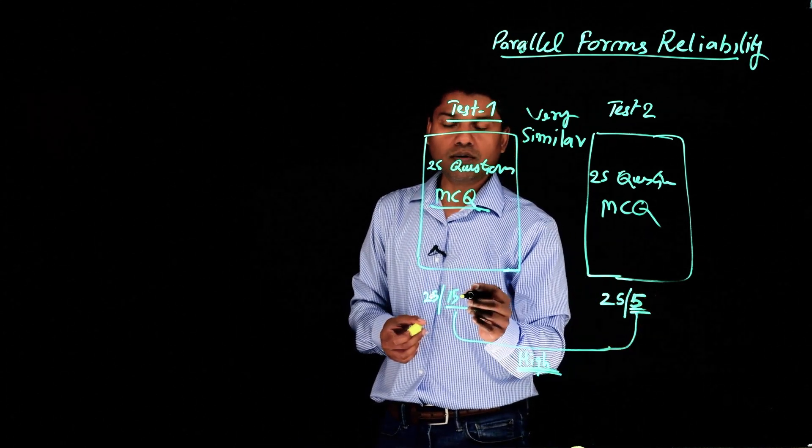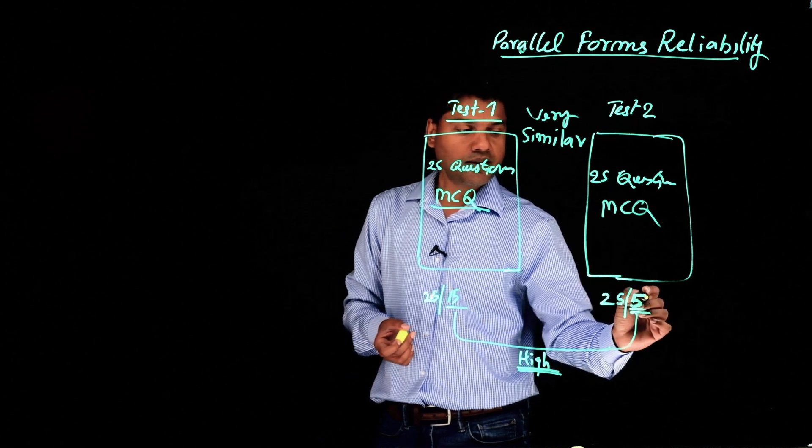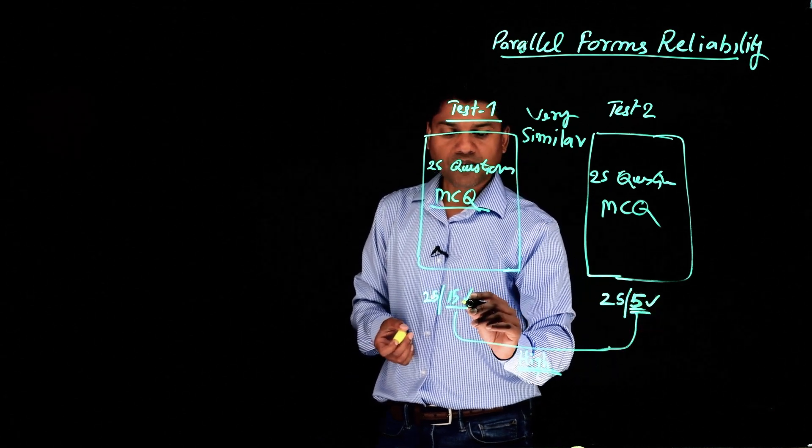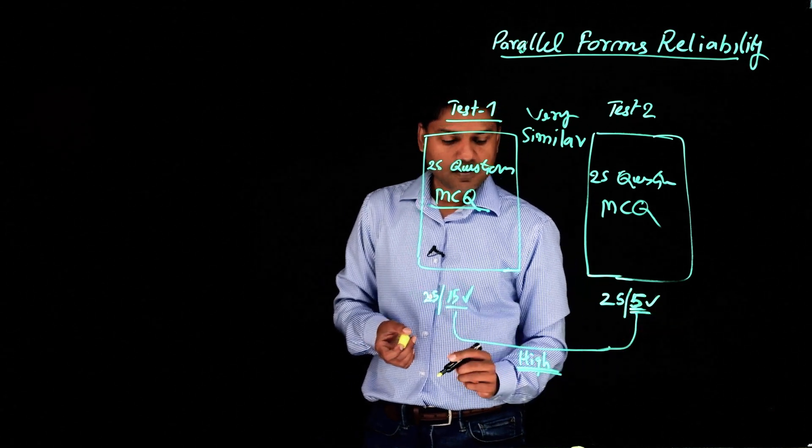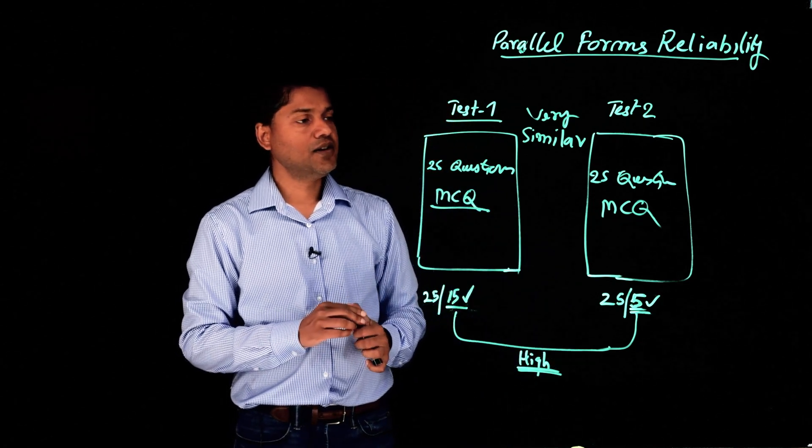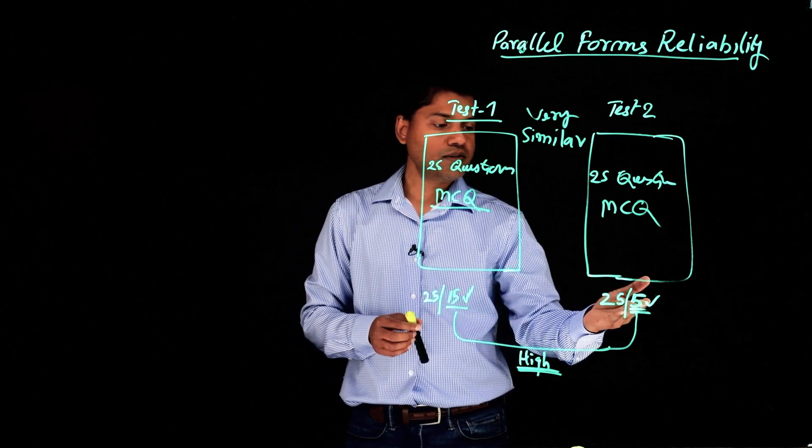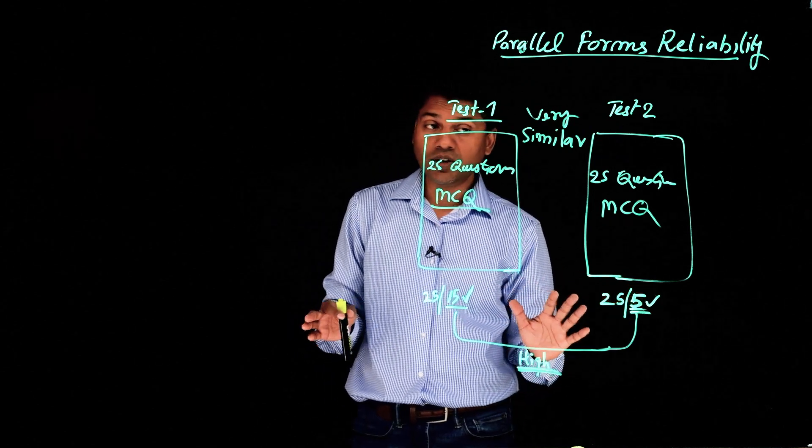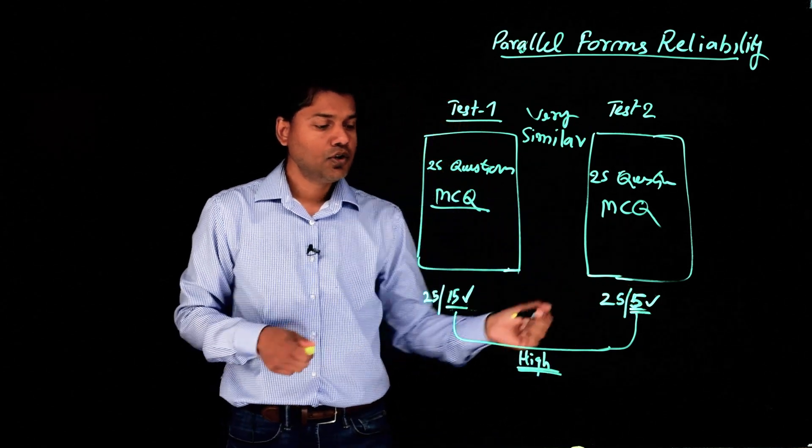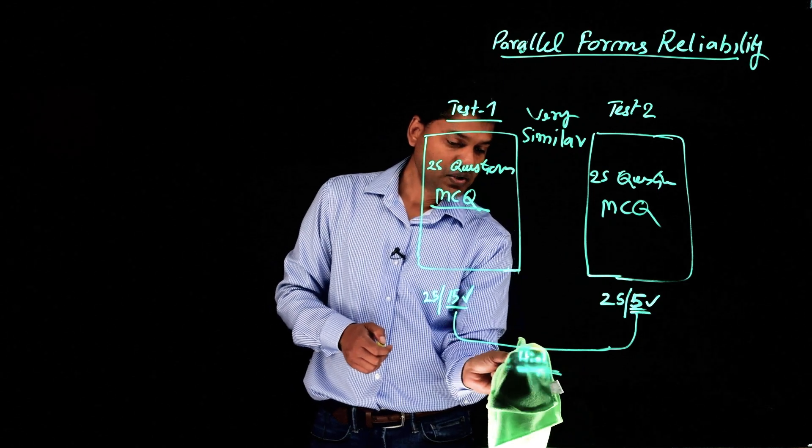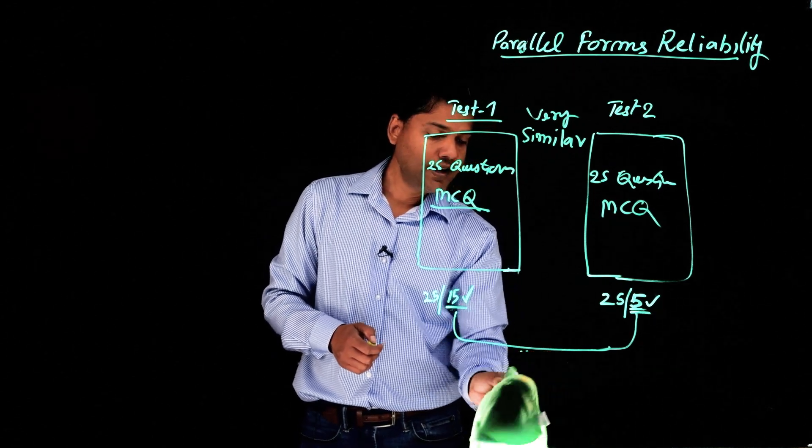On test one, which is 15 right, and here, 5 right. Now, what do you think? These two tests are not consistent in the sense that there's no correlation, 5 and 15. So they are not equal in some way and have low correlation or low reliability.